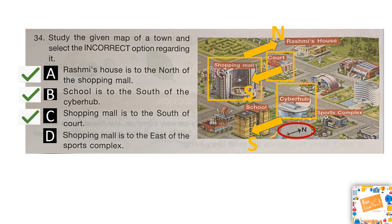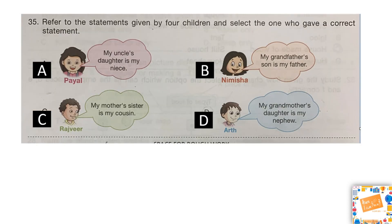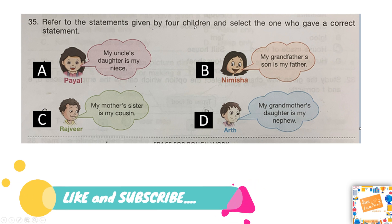Option D says the shopping mall is to the east of the sports complex. East is the right-hand side when facing north. Looking at the map, there is no shopping mall to the east of the sports complex, so option D is the incorrect statement regarding this map.